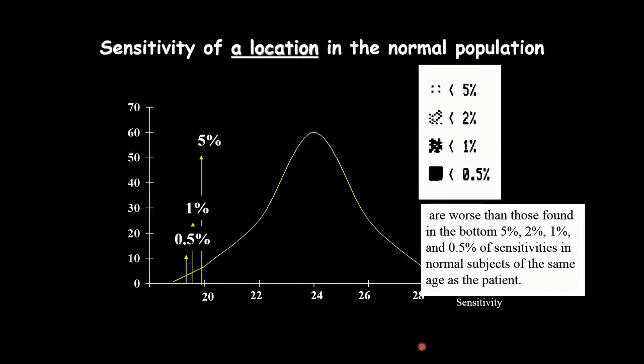So if our patient has a value here, then we will say he is in the lower 2% or 1% of the population. So these values mean that those areas are found in the bottom 5%, 2%, 1%, 0.5% of sensitivity of normal subjects of the same age. So we say these points are low, but this low value can be found in 5% or 2% or so of the normal population. So most probably these points are abnormal, but there is a chance of being normal by 5% or 2% or 1%.